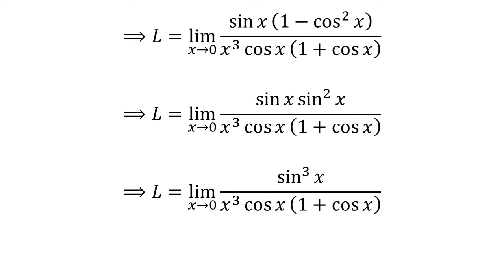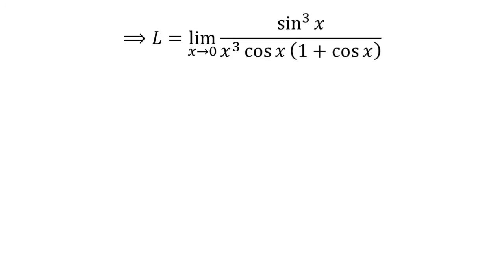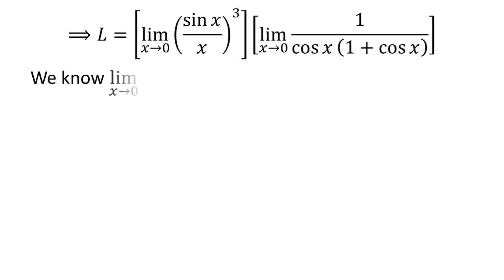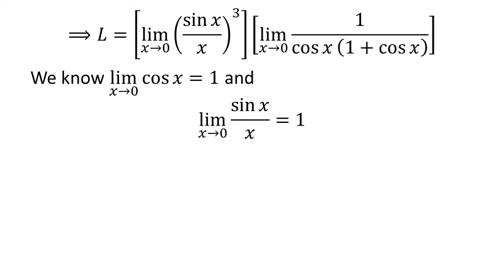We know 1 minus cosine squared of x is equal to sine squared of x; here I have applied this identity and further simplified the numerator. We can rewrite the above expression as L equal to limit of cube of sine of x upon x, times limit of 1 upon cosine of x times 1 plus cosine of x, as x approaches zero. Since the cosine function is continuous at zero, the limit of cosine of x equals 1 at x equals zero, and we know the limit of sine of x upon x equals 1 as x approaches zero.